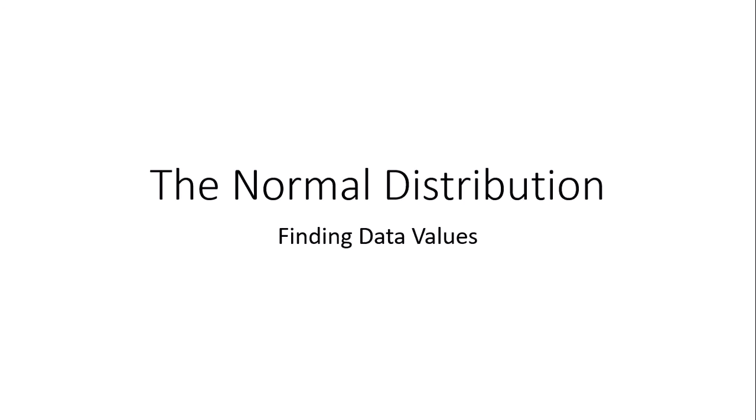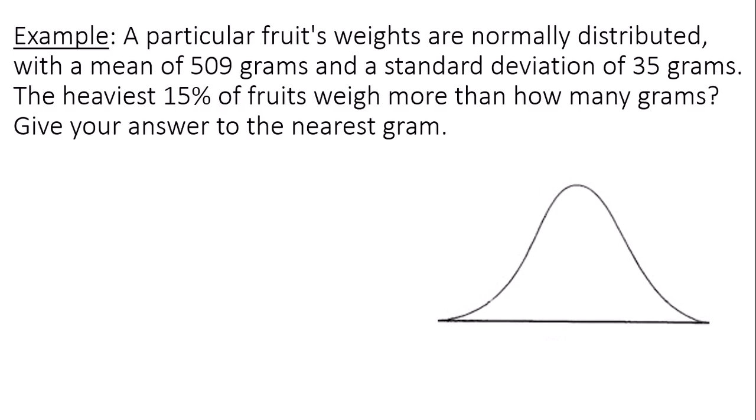This is a video on using the normal distribution probabilities to find data values. There's a particular fruit that weighs 509 grams as the mean and the standard deviation is 35 grams. The weights are normally distributed.